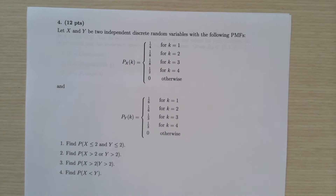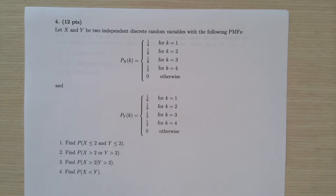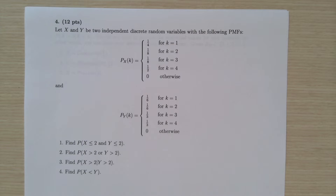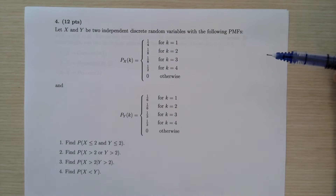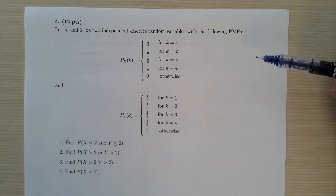All right, next one. This might be a little bit more involved. So we have two independent discrete random variables with the following PMF. As you can see, for the range, x and y both go from 1 to 4, but they have different PMFs.